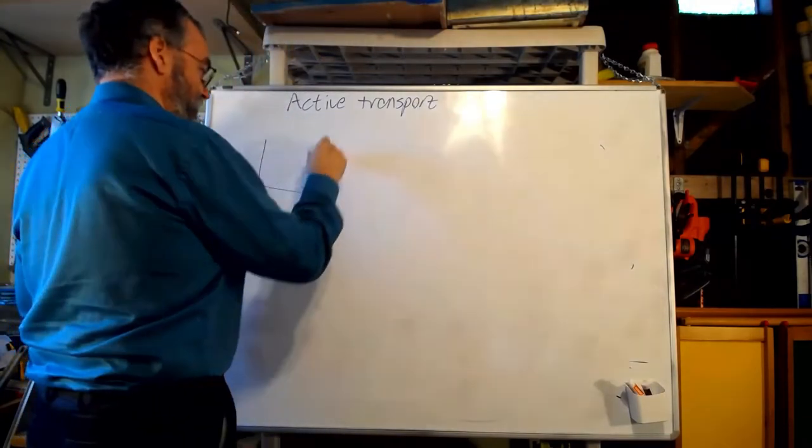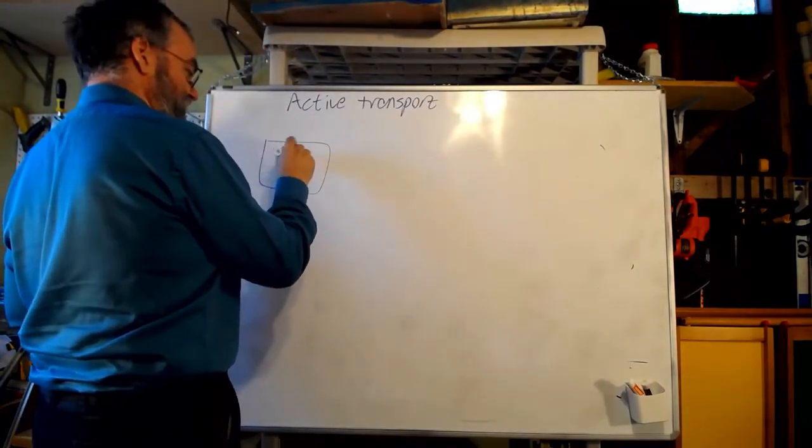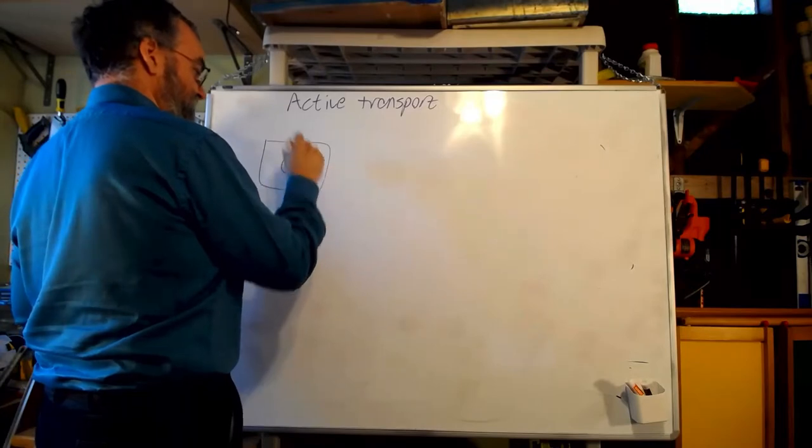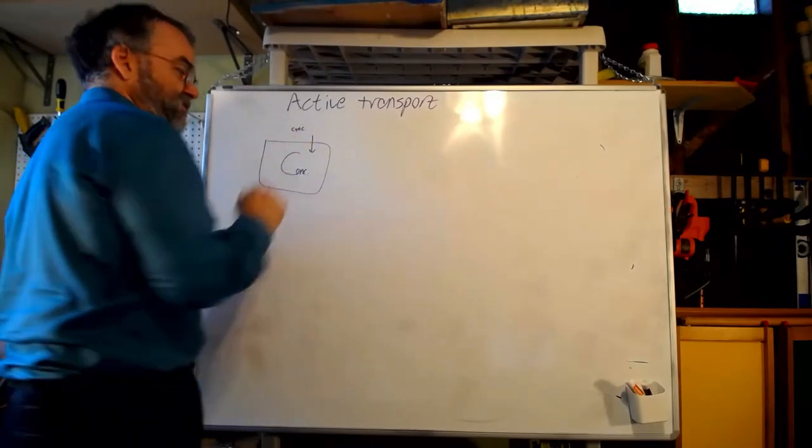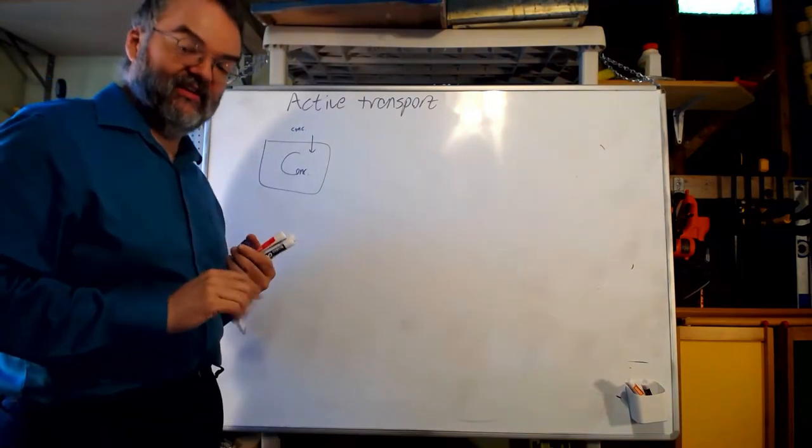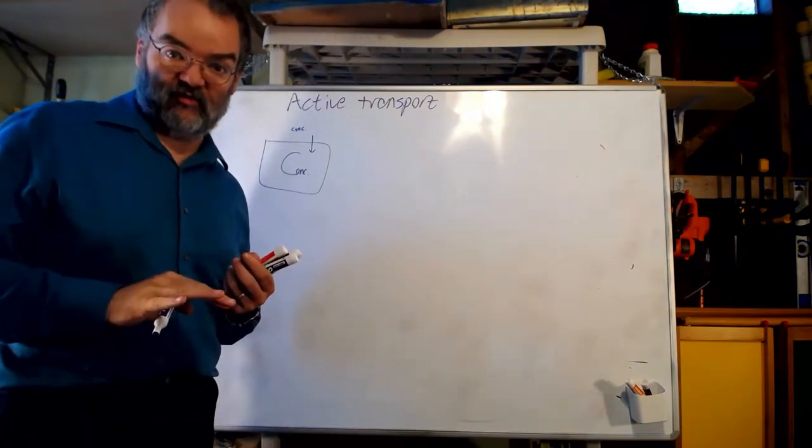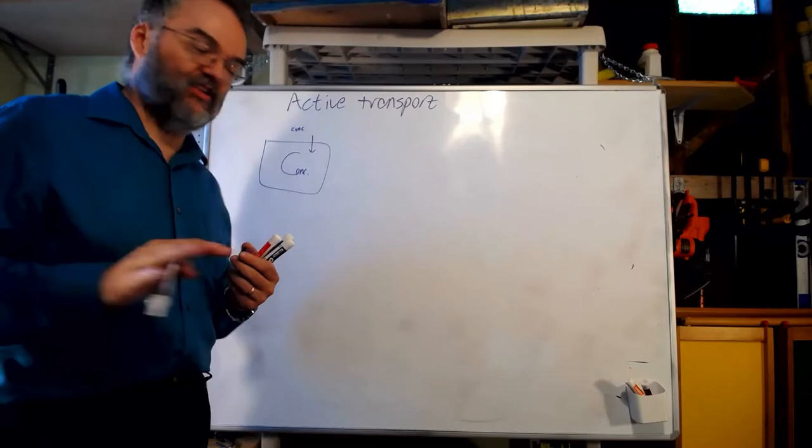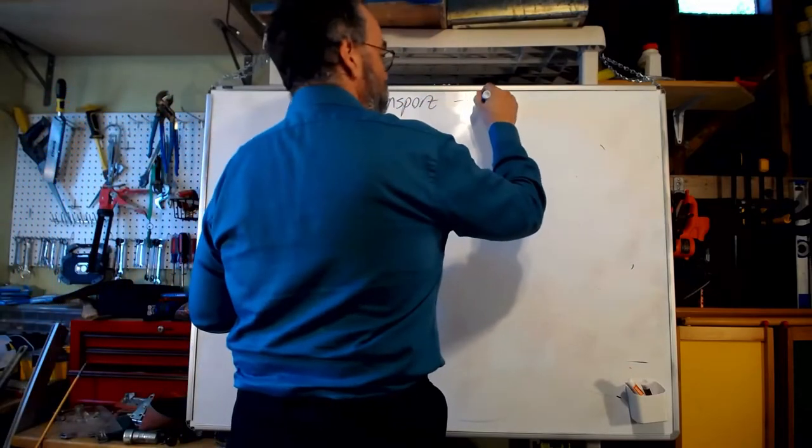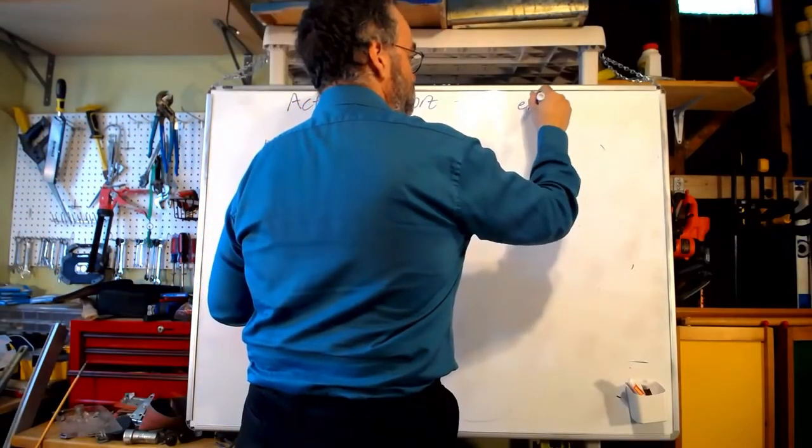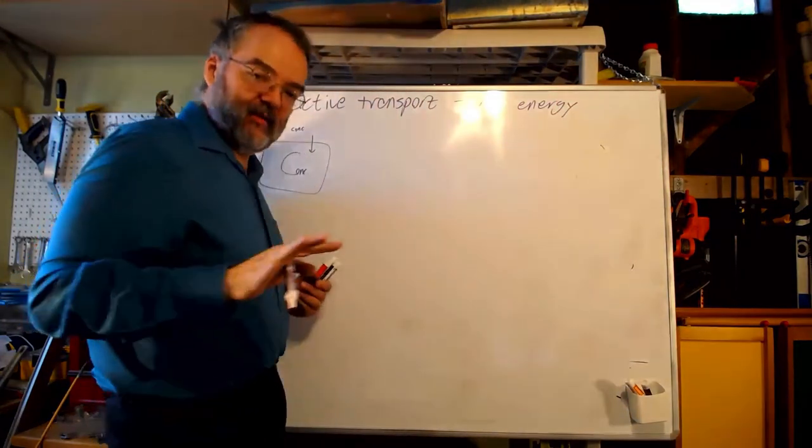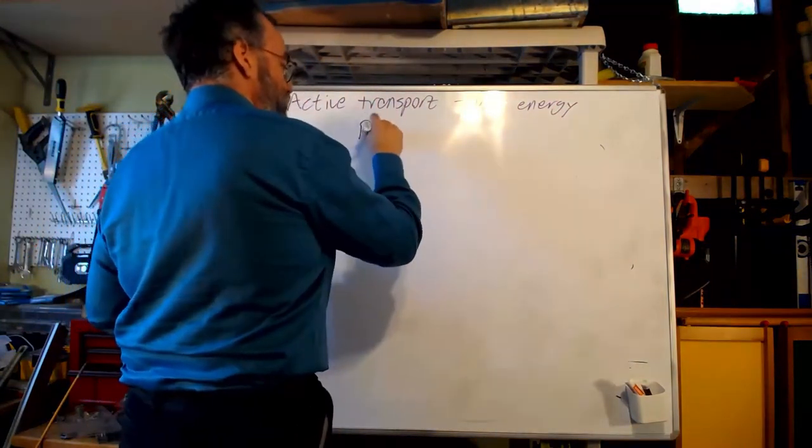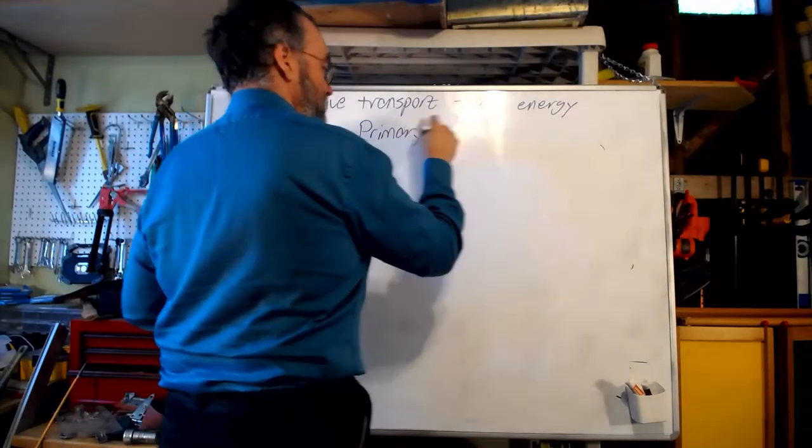So if I've got a cell, and I've got a higher concentration inside than outside, and the movement is in this direction toward the higher concentration, some kind of active transport is being used there. Energy is being used. But active transport comes in a couple of types. Primary and secondary.